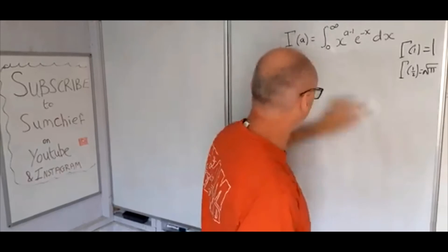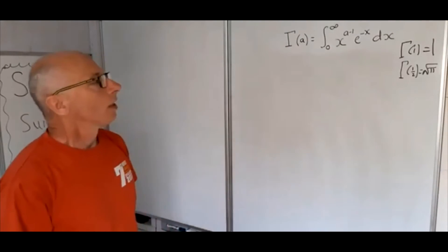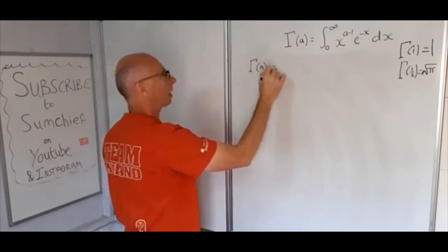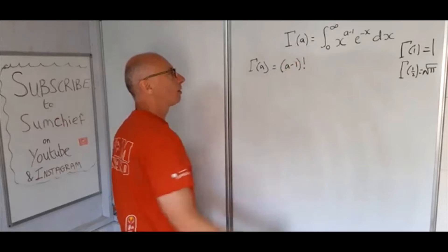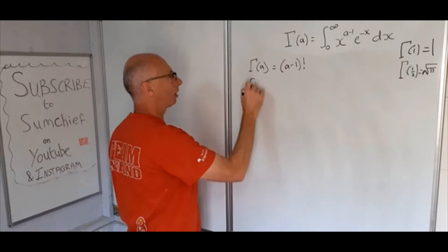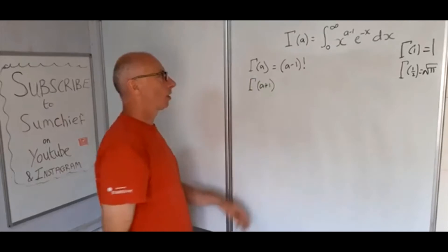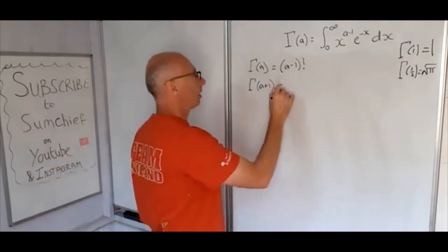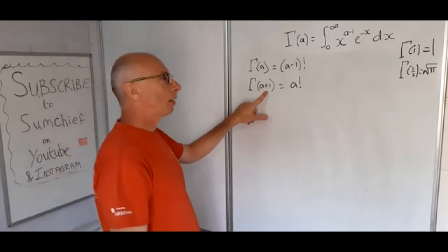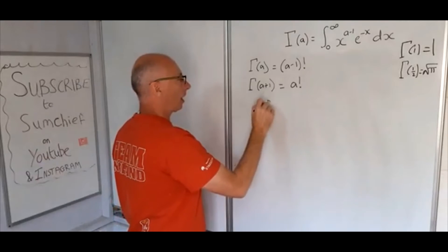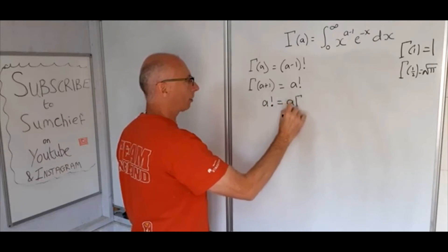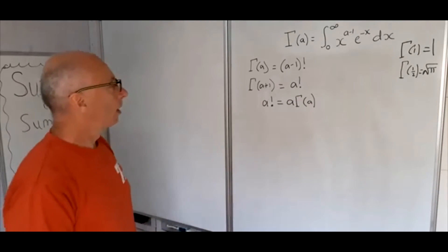Now let's look at properties of the gamma function. In general, gamma of a equals a minus 1 factorial. A key recursive property is that gamma of a plus 1 equals a times gamma of a. So for example, gamma of a plus 1 with a plus 1 minus 1 giving a just becomes a factorial, and a factorial equals a times gamma of a.